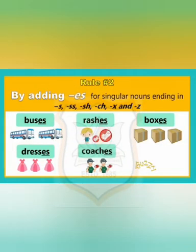Rule number 2: by adding ES for singular nouns ending in S, SS, SH, CH, X, and Z.